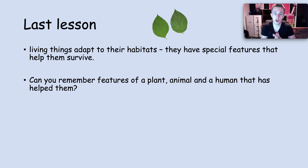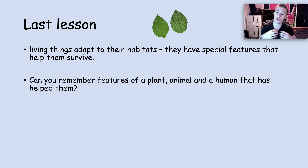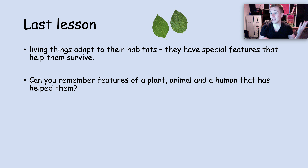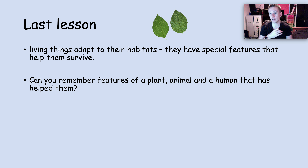So last lesson we looked at a variety of living things and we looked at features that they have that allow them to do well in their environment. For example, if you think of a giraffe, a giraffe has a really long neck and the really long neck allows it to get food out of very tall trees. Without that feature, it would struggle to survive.